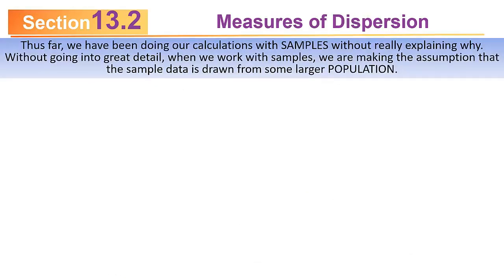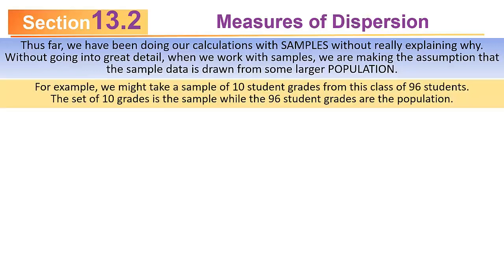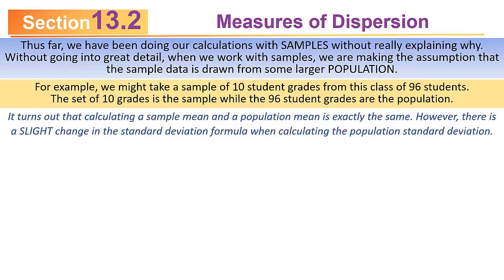So far, we've been doing our calculations with samples without really explaining why. Now, without going into a lot of detail, when we work with samples, we're making the assumption that the sample data is drawn from some larger population. For example, we might take a sample of 10 student grades from a class of 96 students. This set of 10 grades is the sample, while the 96 student grades are the population.